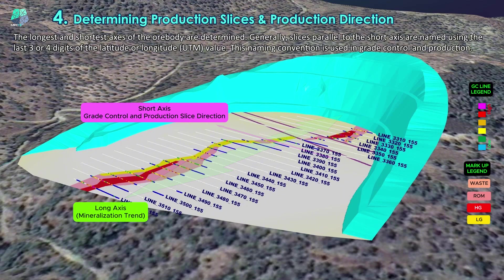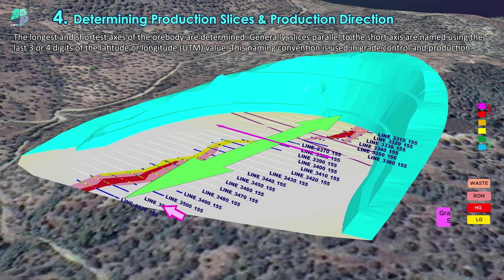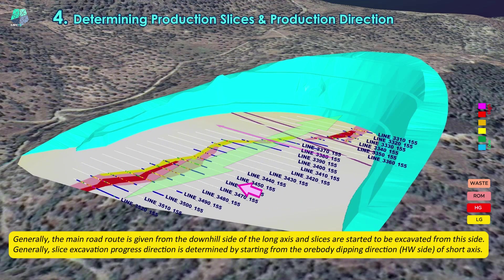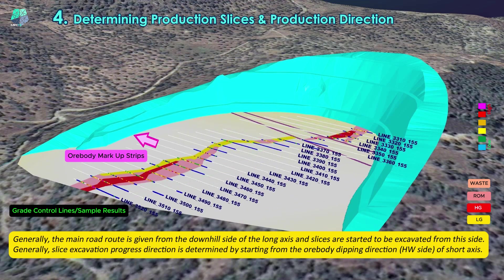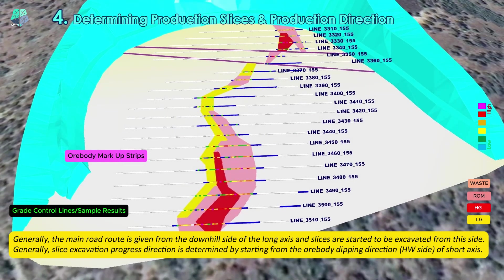Generally, slices parallel to the short axis are named using the last 3 or 4 digits of the latitude or longitude value, which is used in grade control and production. The main road route is given from the downhill side of the long axis, and slices are started to be excavated from this side.